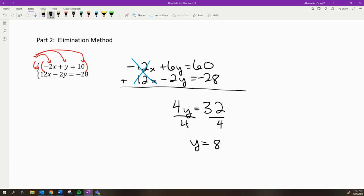Now I can find x using either equation. I'll use this equation as originally written because the numbers are small. So -2x + 8 = 10. If I subtract 8 from each side,